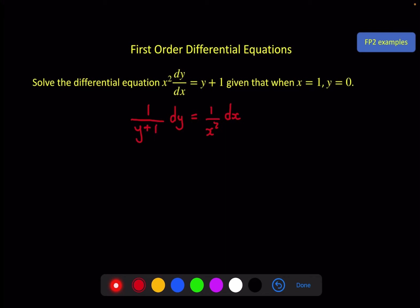Once it's like this, you can now add your integral symbols and integrate both sides. On the left-hand side, a 1 over something, this becomes a natural log. And on the right-hand side, this is minus x to the minus 1, or minus 1 over x. And remember, now that we've done the integration, the constant of integration must come in at this point before I start rearranging.